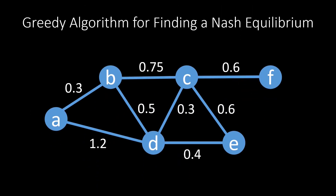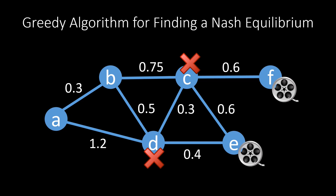Let's discuss the algorithm with an example. Here we have a little network. We simply choose any node to cache the movie right away, for example node f. Now all the nodes who are at most at distance 1 from node f decide not to cache the movie. Node c is close to f, but also node d, which is only at distance 0.6 plus 0.3, which is still cheaper than caching the movie itself. Once we mark all nodes which do not want to cache the movie anymore, we simply choose any other node again to cache the movie — let's say node e. Again node b is close enough to e to drop out, and so on. We always choose a remaining node to cache the movie and mark all nodes in its vicinity to fetch the movie instead, until all nodes are decided.